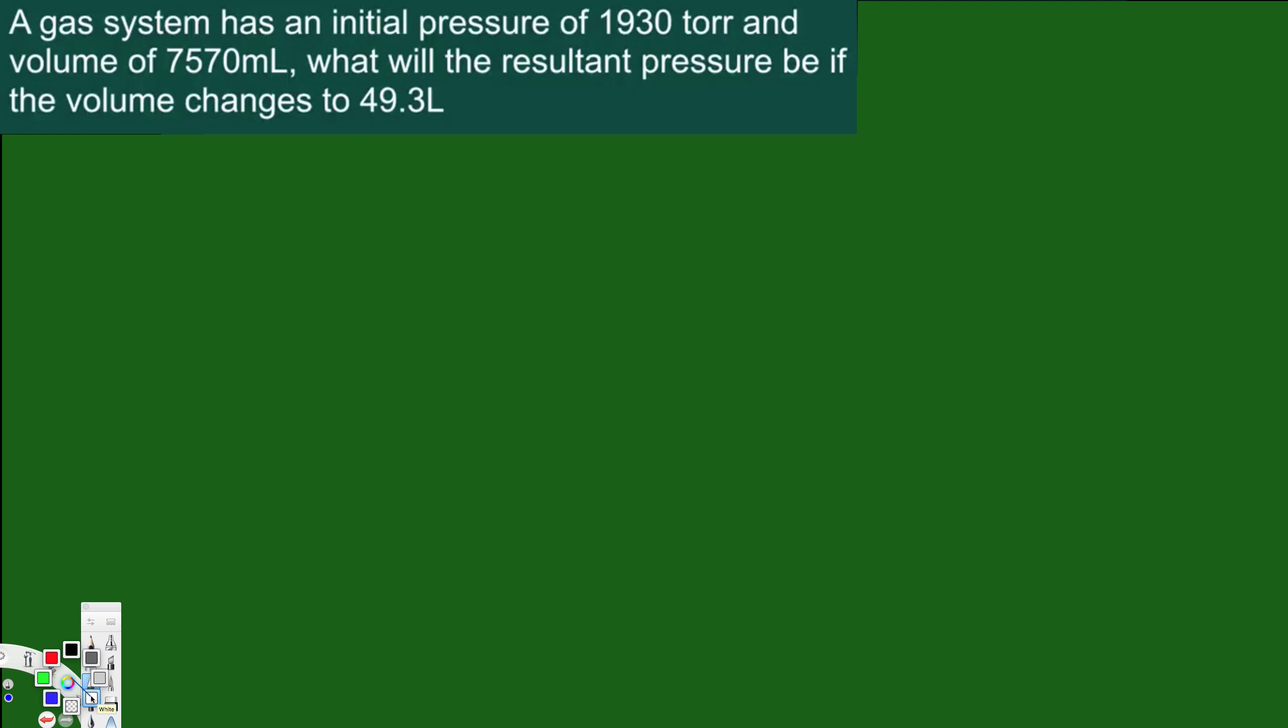Let's see how we can find this one. So here we are going to use P1V1 equals P2V2 equation. And if you notice, it's saying initial - so we have initial pressure of 1930 torr and volume of 7,570 milliliters.